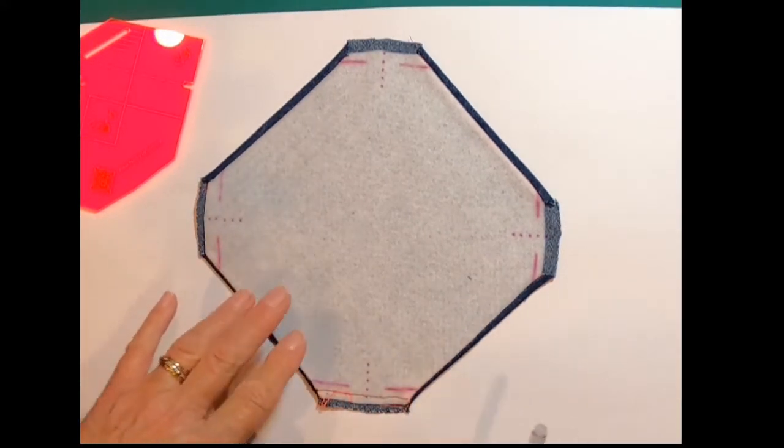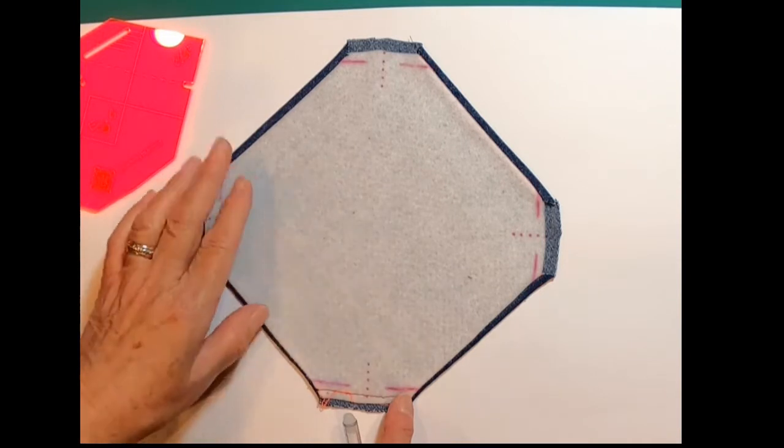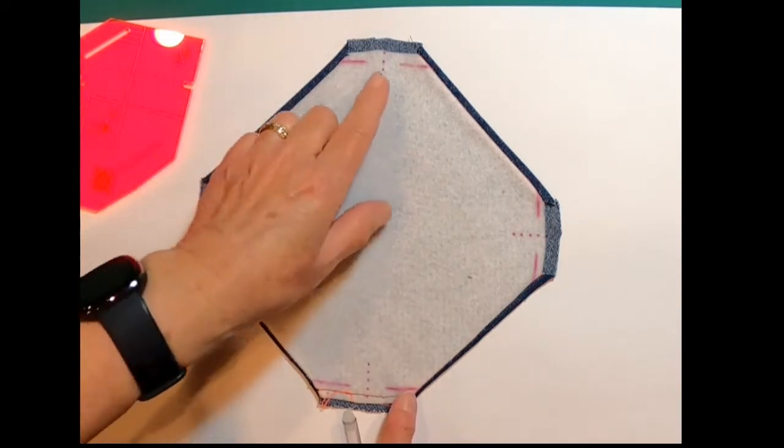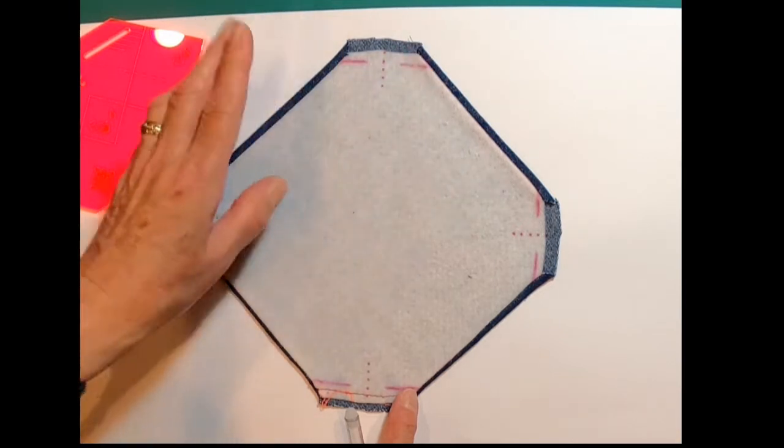The next thing to do after the quilt has been sewn to its lining, flipped, and then pressed, is to add these centering guidelines and fold-to lines.